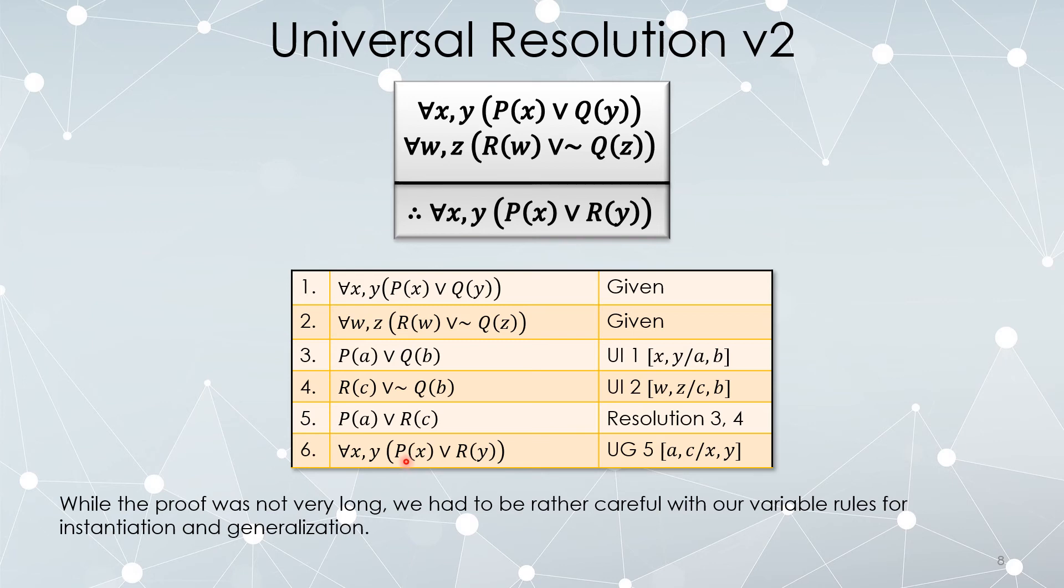Okay, the variable rules for both existential and universal instantiation and generalization take a bit of getting used to. Just remember that it makes a lot of intuitive sense. Universal instantiation is very unrestricted because if something is always true, it is easy to say it is true for something in particular. But existential instantiation, it's a bit more tricky because if something is only true sometimes, you have to be careful about saying it's true for something in particular. Generalization is the opposite. If something happens to be true for something, it's easy to say sometimes it's true. But if something is true for a particular element, it's very difficult to get to the statement that it must always be true.